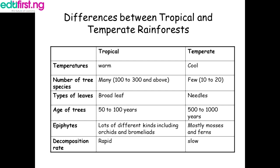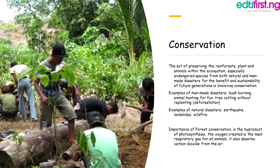Conservation is the act of preserving the rainforest plants and animals within the ecosystem — especially endangered species — from both natural and man-made disasters, for the benefit and stability of future generations. Examples of man-made disasters include bush burning, animal hunting for fun, and tree cutting without replanting. Examples of natural disasters include earthquakes, landslides, and wildfires.